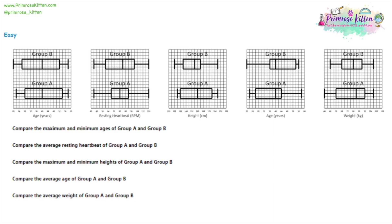We're going to have a look at comparing data using box plots — a really good tool to compare data with. You can clearly see that a box plot has five different elements: the minimum value, the lower quartile, the median, the upper quartile, and the maximum value.